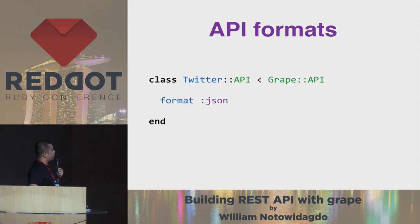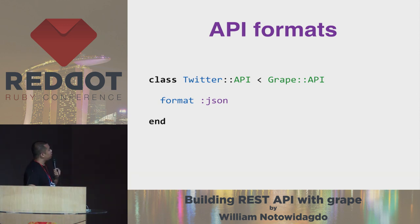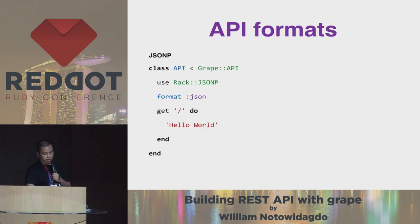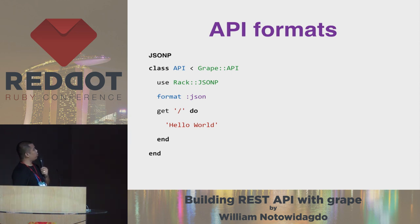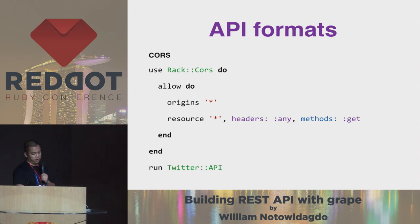I'd like to introduce you to the API formats. GRIB provides us with four formats: JSON, XML, and also TXT. Here we define the response always as JSON. GRIB also supports JSONP — you can use rack-JSONP. Also, GRIB provides rack-cors so you can use CORS on your REST API.